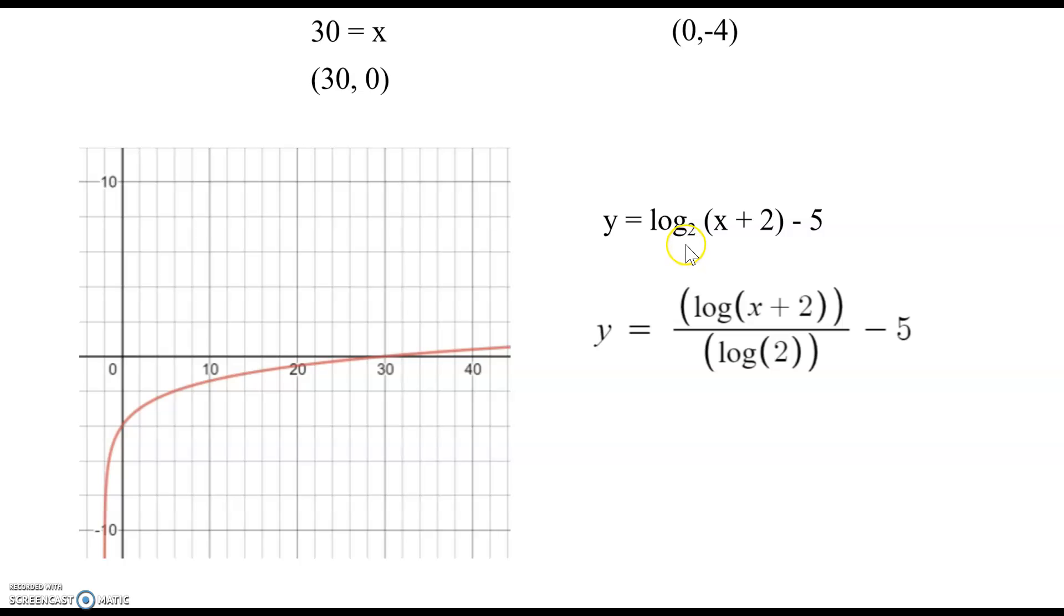So the change of base formula says you use the common log or natural log—I chose common log—of the inside expression divided by the log of the base. So the log of (x + 2) divided by the log of 2, and we still have our minus 5. That gives me this nice graph, and since each tick mark here represents 2, we can see that yes it does cross at negative 4 on the y-axis and over here it did cross at 30 on the x-axis. So if you have an extra minute, go ahead and try checking your answers with your graphing technology.